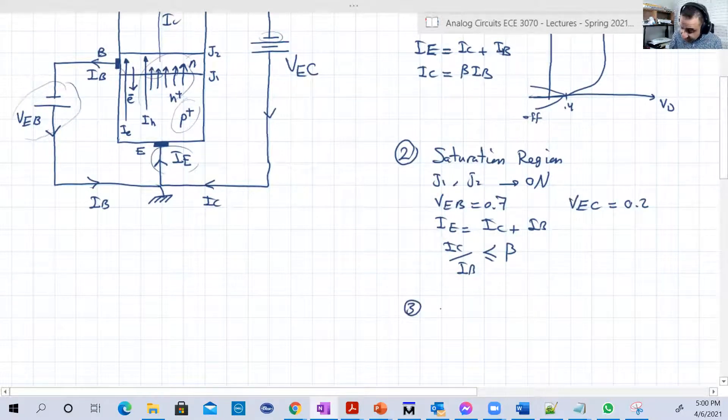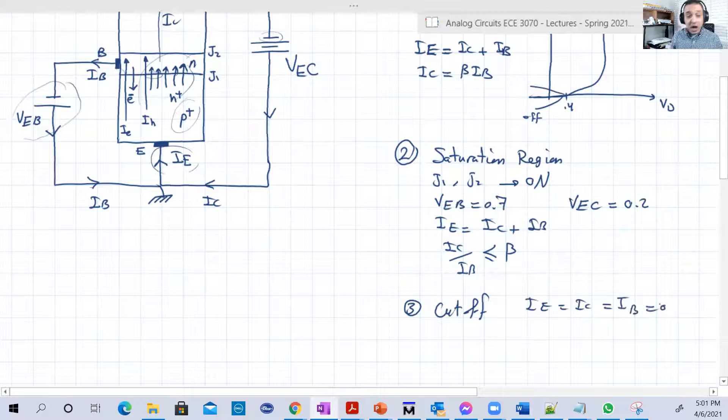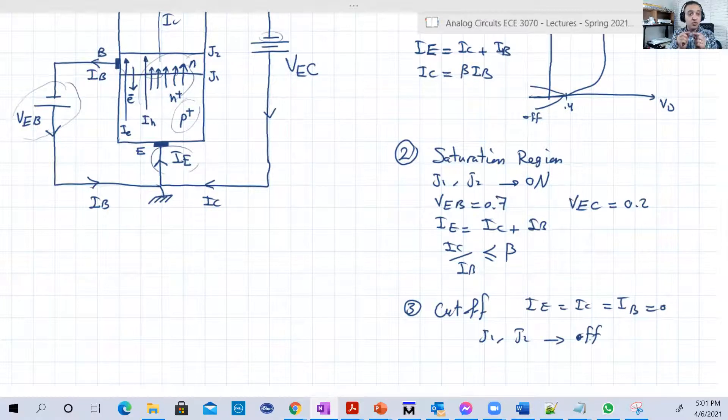That's basically the second region. The last region I have, which is cutoff, basically everything is zero. IE equals IC equals IB equals zero. Why? Because both junctions are off. So J1 and J2 are off. Again, off means one of them might be forward but with very small voltage, less than 0.7. That's why it will not turn on.